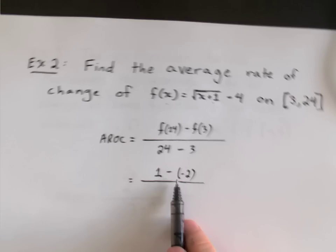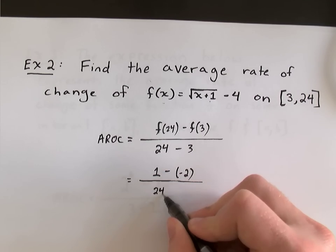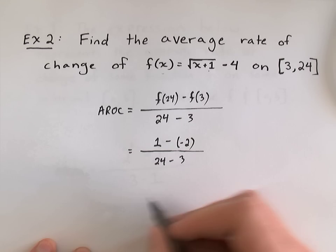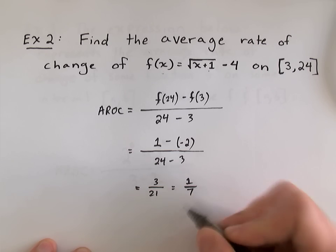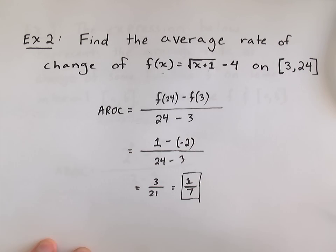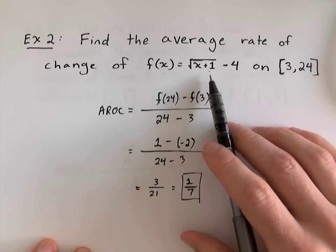Make sure you pay attention to the two negatives there. And that's all over 24 minus 3. 1 minus negative 2 is 3. And 24 minus 3 is 21. And 3 over 21 is 1/7. So, we just found the slope of that curve on that interval.